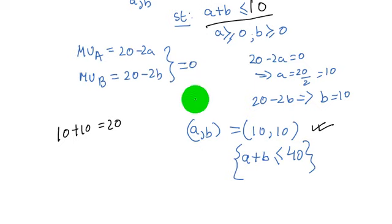In this case then, the bliss point 10, 10 that we obtained is not affordable.